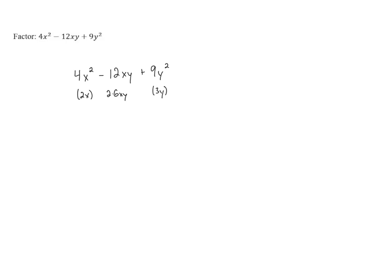So this is a perfect square trinomial, but because the middle term is negative, that means that instead of factoring this as a sum times a sum, it's going to be a difference times a difference,